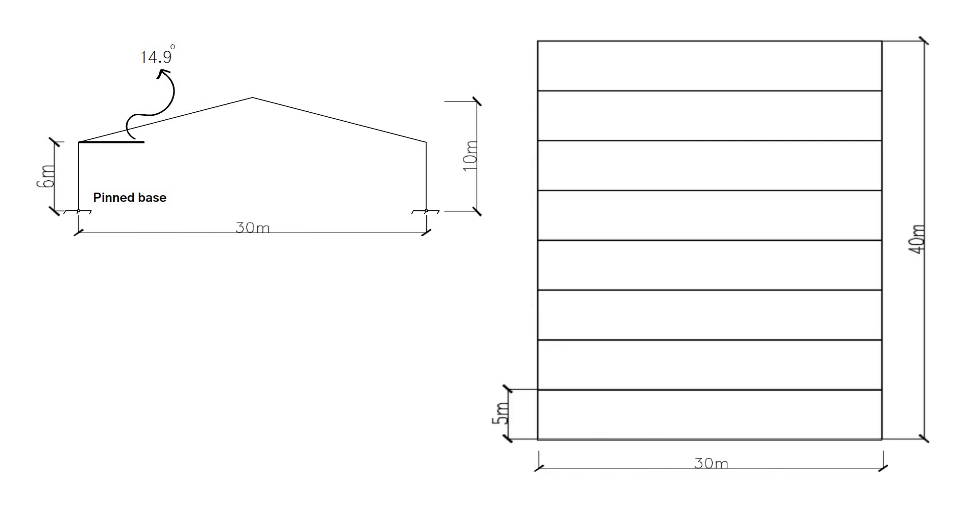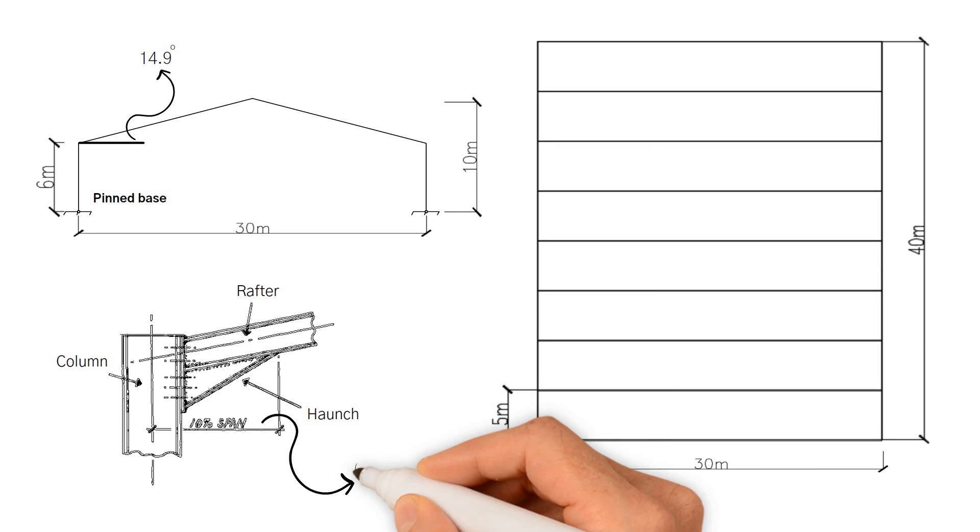As we mentioned earlier, the length of the haunch is 10% of the span of the frame, equals 0.1 times 30 meters, which equals 3 meters.